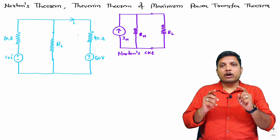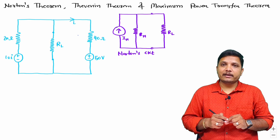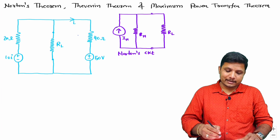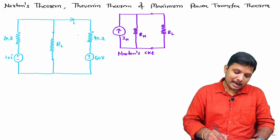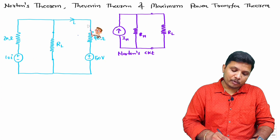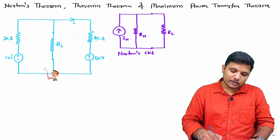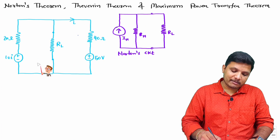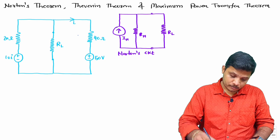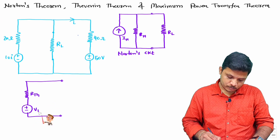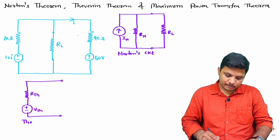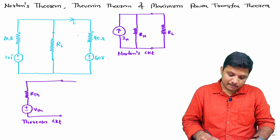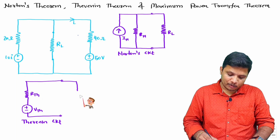When we talk about Thevenin's equivalent circuit, that is an equivalent resistance and an equivalent voltage source connected in series for the given network. This is Thevenin's equivalent circuit, and here we connect the load.